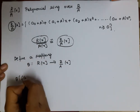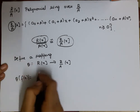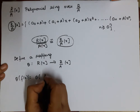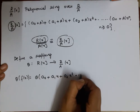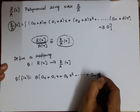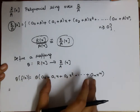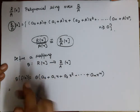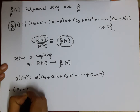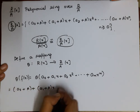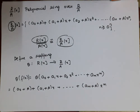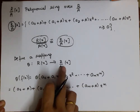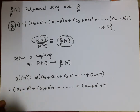For an element f(x) in R[x], suppose f(x) = a₀ + a₁x + a₂x² + … + aₘxᵐ. We define θ(f(x)) = (a₀ + A) + (a₁ + A)x + … + (aₘ + A)xᵐ. We can clearly see that θ is well-defined.